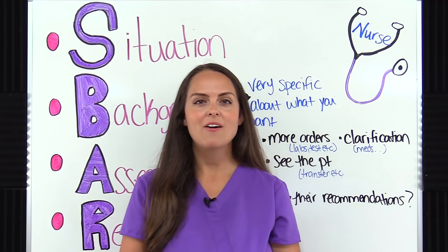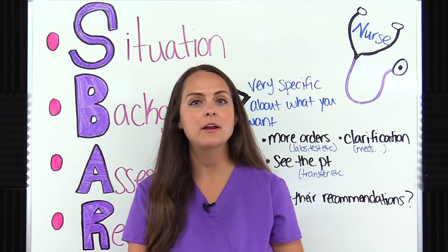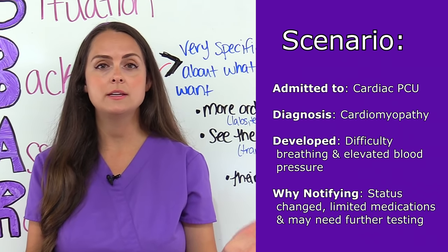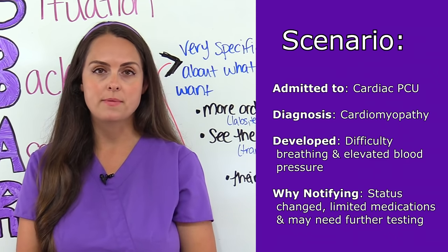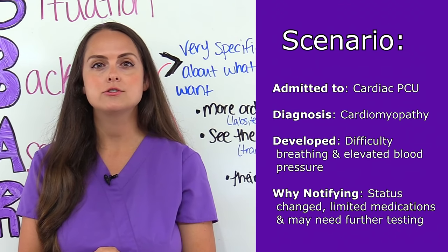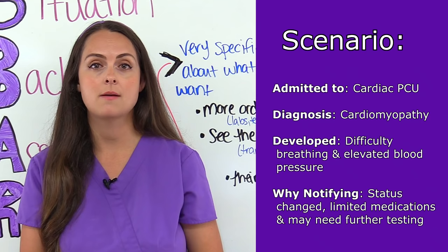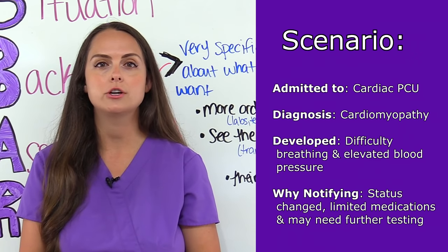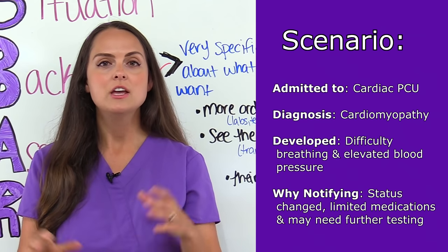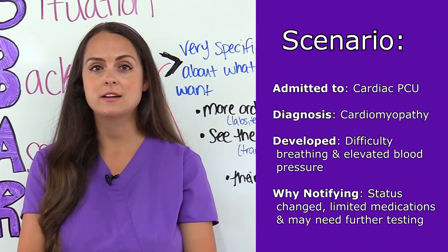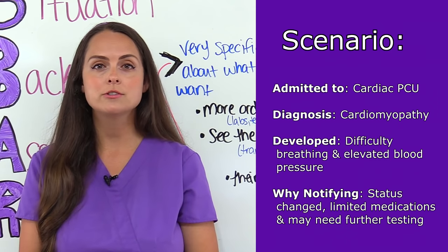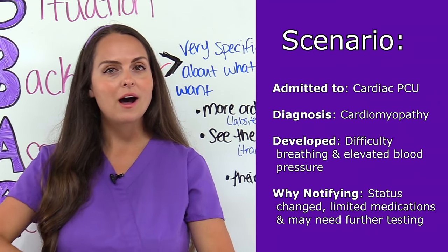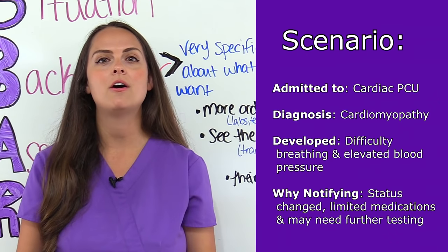Now let's go through an example of how a nurse would use the SBAR method to communicate with a physician about a patient who was just admitted and is starting to deteriorate. The patient was admitted to your cardiac PCU floor with a diagnosis of cardiomyopathy. Around midday, the patient started having extreme difficulty breathing and their blood pressure became elevated. You look through the patient's medications and don't have anything to help decrease the blood pressure or help with their respiratory status, so you need to notify the physician.